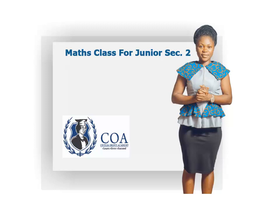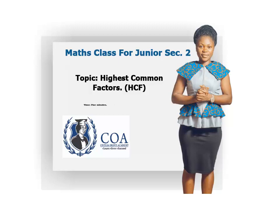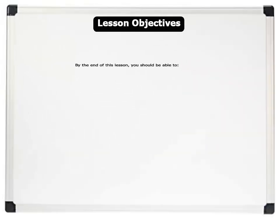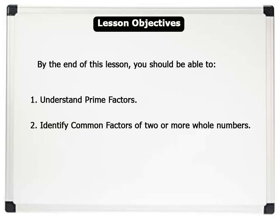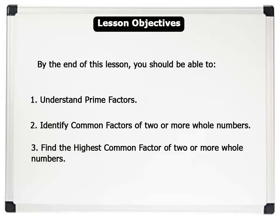Hello. Our topic for this lesson is Highest Common Factors. Lesson duration is 5 minutes. Let us see our lesson objectives. By the end of this lesson, you should be able to: 1. Understand prime factors. 2. Identify common factors of two or more whole numbers. 3. Find the highest common factor of two or more whole numbers. Now, let us begin.